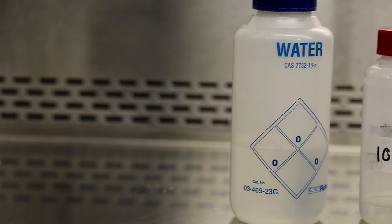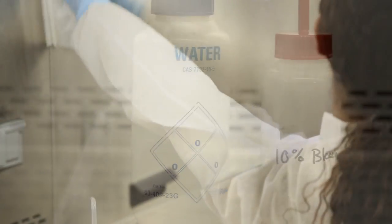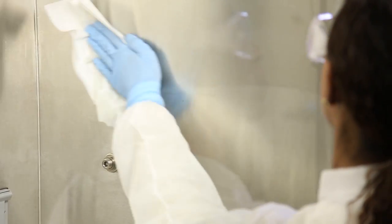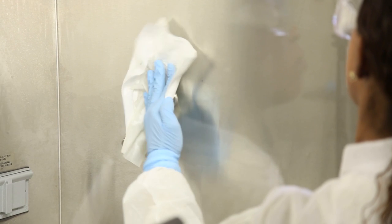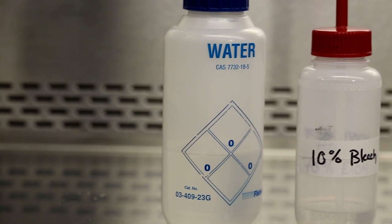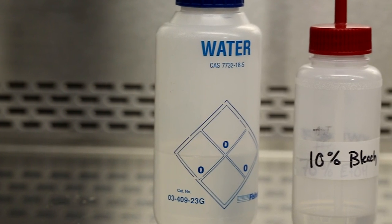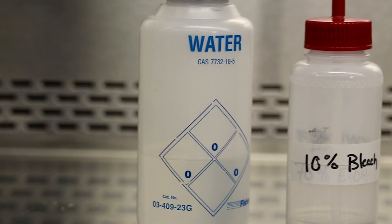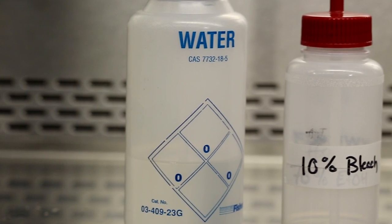If bleach has been used as a disinfectant, wipe the BSC surfaces again with water or 70% ethanol to remove any bleach residue. This is because bleach is corrosive and can pit the stainless steel, which can provide an ecological niche or environment for microorganisms to evade cleaning and disinfection.